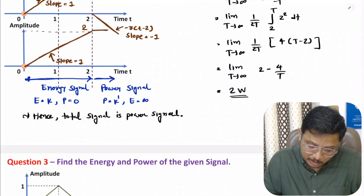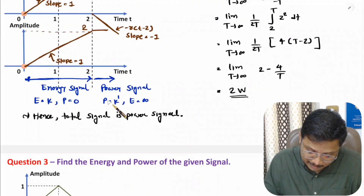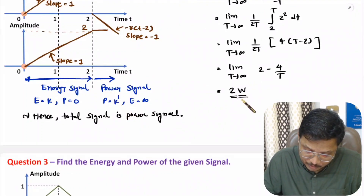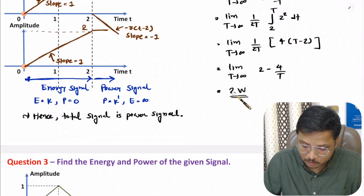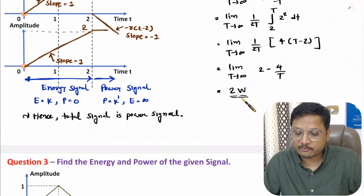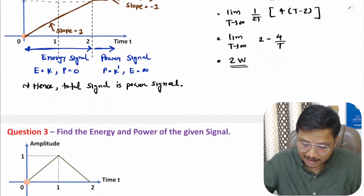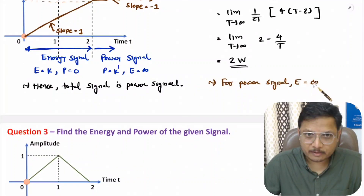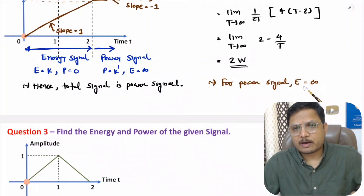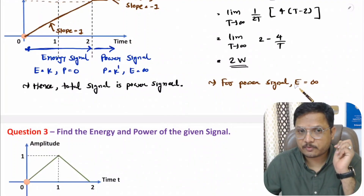So total power k′ is 2 watts plus 0, giving total power of 2 watts and energy of infinite. For a power signal, energy is infinite. Now I will solve the last question of this video.